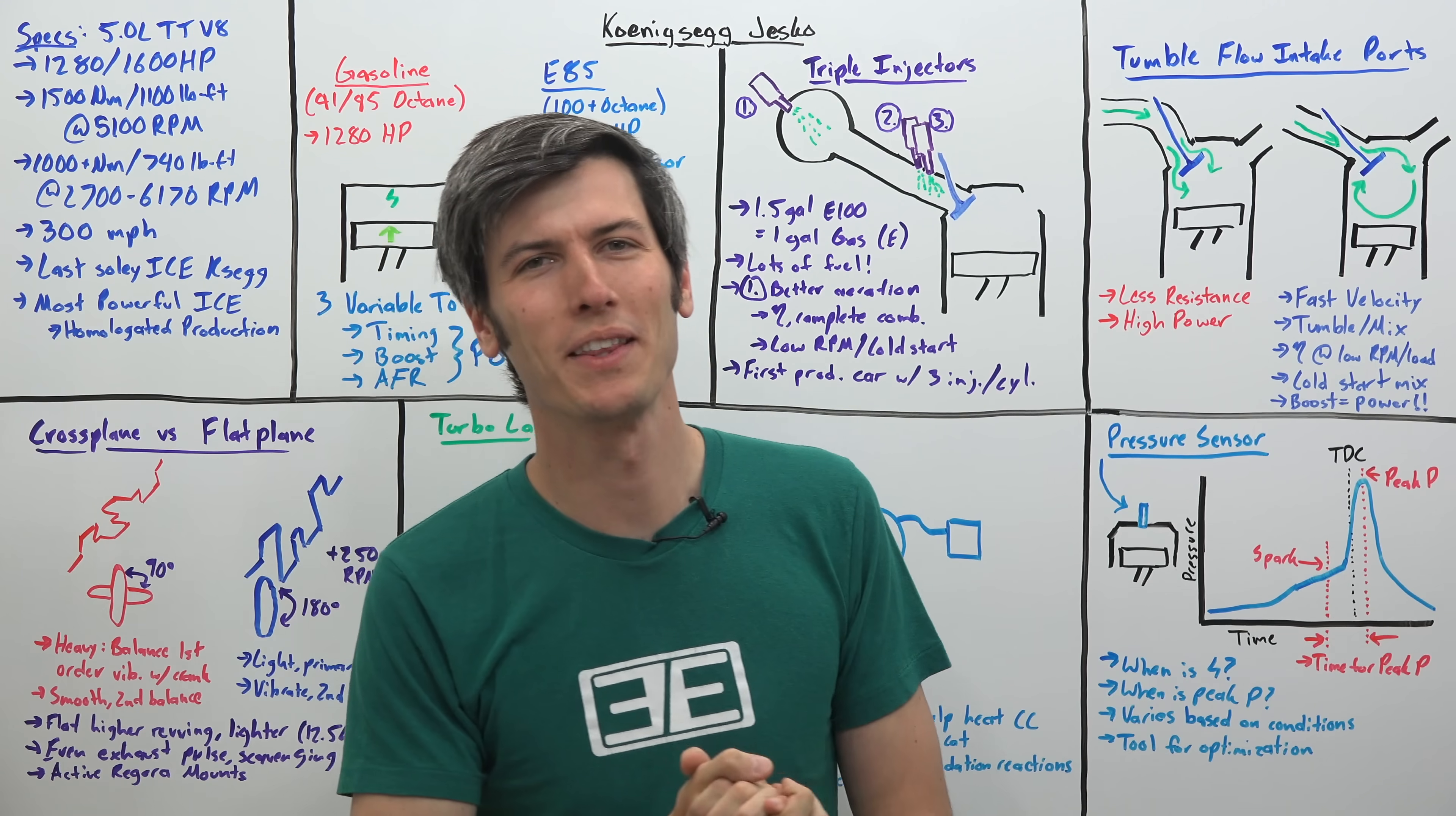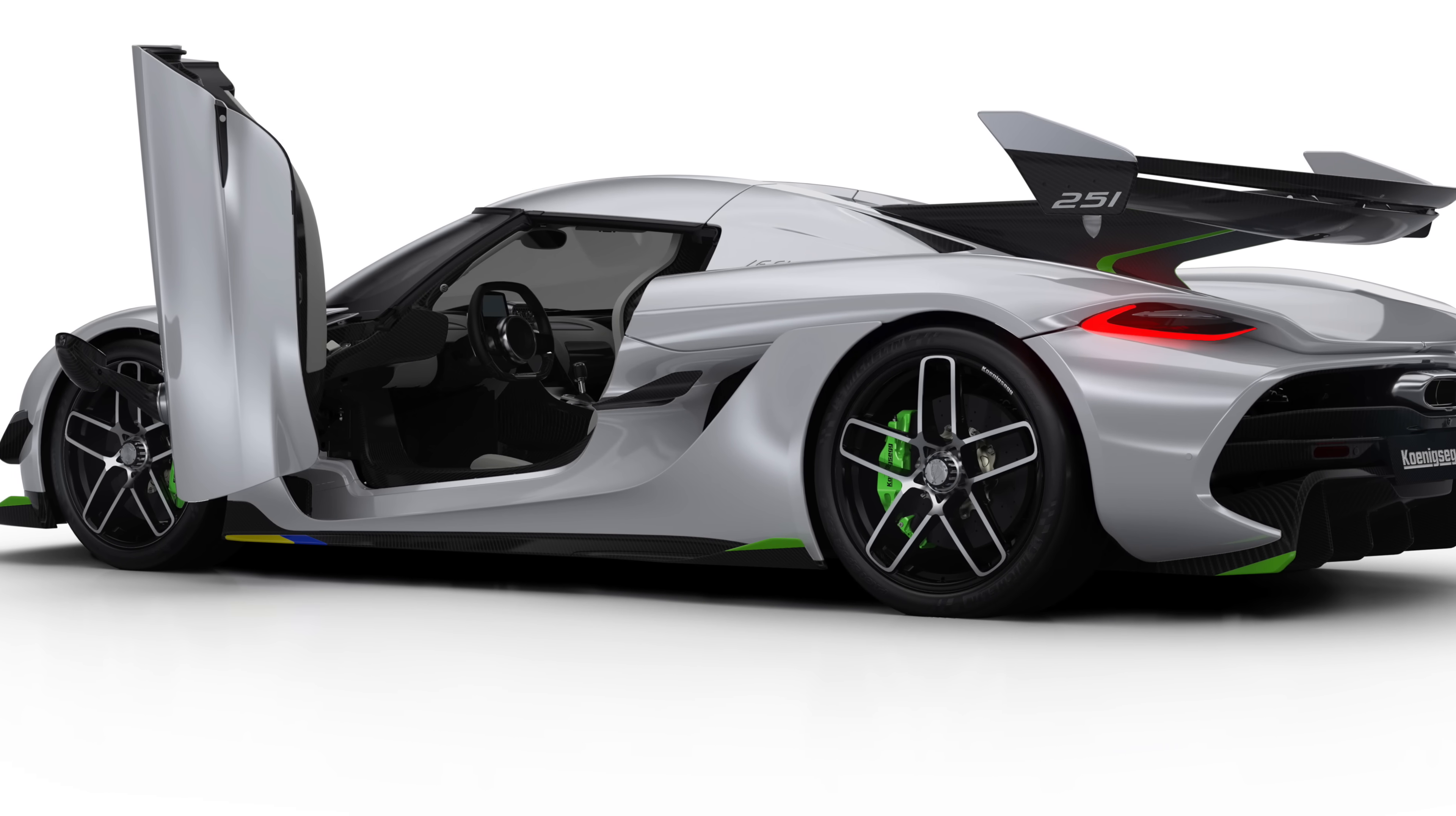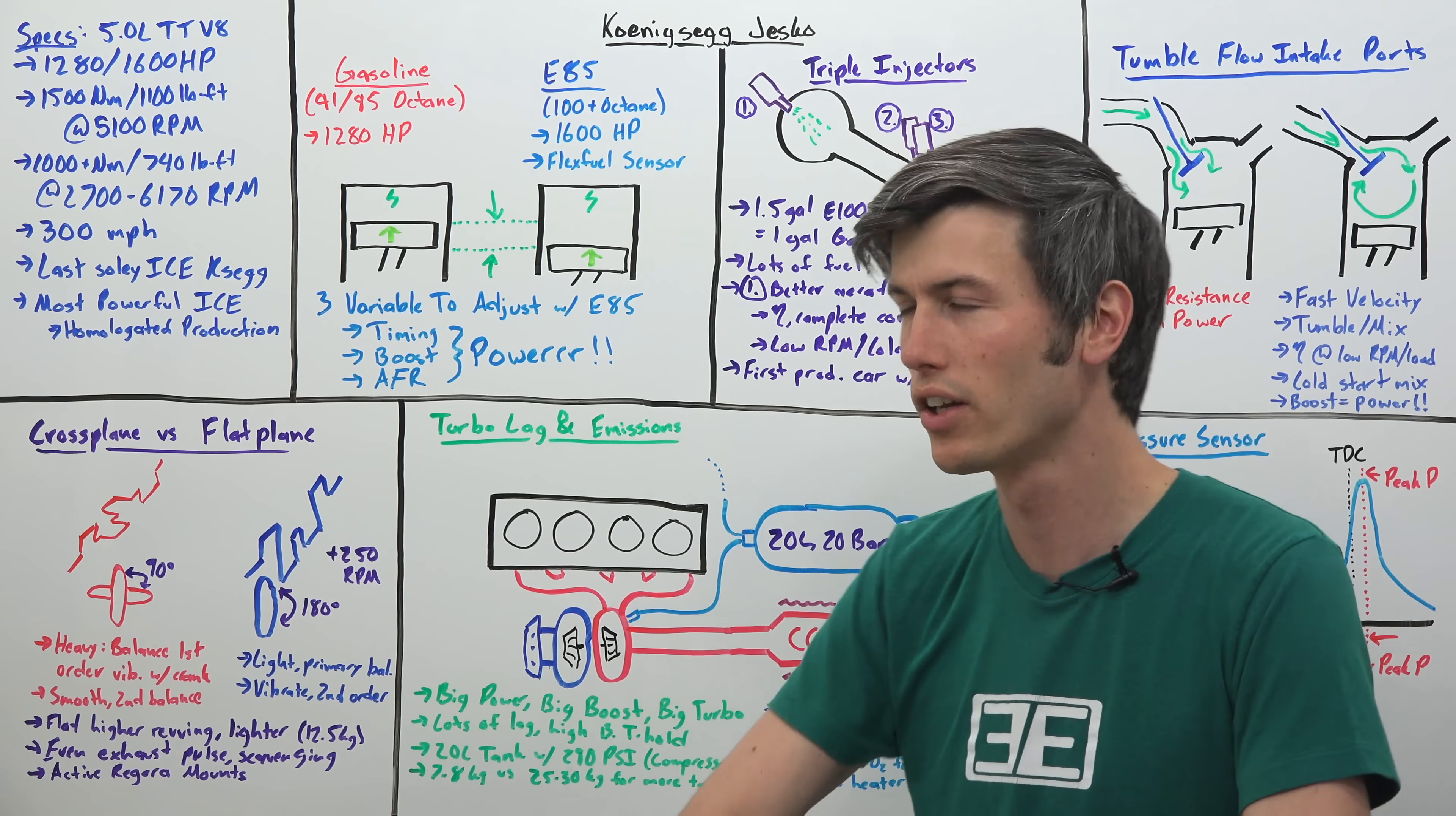Hello everyone and welcome. In this video we are talking about the engine in the new Koenigsegg Jesko. This is a very crazy, very wild, super powerful new mega car that Koenigsegg has released. We're going to break down the engine, some of the different components, and all kinds of clever engineering that Koenigsegg has done with this engine.